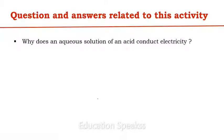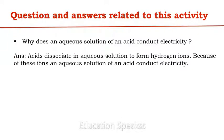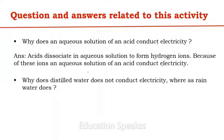Now we will discuss questions and answers related to this activity. First question: why does an aqueous solution of an acid conduct electricity? The answer is: acids dissociate in aqueous solution to form hydrogen ions, and because of these ions, an aqueous solution of an acid conducts electricity.